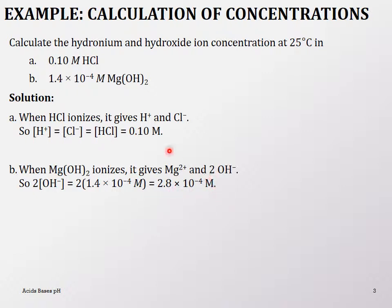Similarly, for HCl the concentration would have been doubled if it were a diprotic acid — for example H₂SO₄ you would double the concentration. So the key is to always do the mole ratios when calculating hydronium ion and hydroxide ion concentrations.